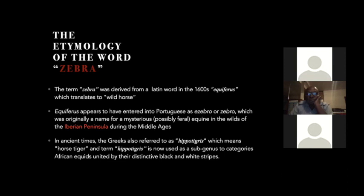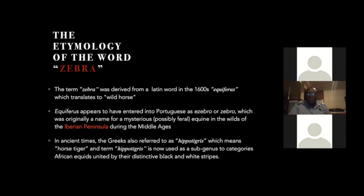'Equiferus' is a combination of two terms: 'equus' and 'ferus'. The term entered Portuguese as 'zebra', originally referring to a mysterious or possibly feral equine of the Iberian Peninsula, which is on the southwestern corner of Eurasia. In ancient times, the Greeks also referred to the zebra as 'hippo tigris', meaning 'horse tiger', a term now used as a subgenus to classify African equids with black and white stripes.